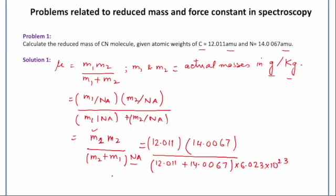Now when we try to solve this particular expression, we get the value as 1.0737 into 10 raised to the power minus 23 grams. And if I wish to convert it into kilograms, definitely I will be doing it. So it will be 1.0737 into 10 raised to the power minus 26 kilograms.